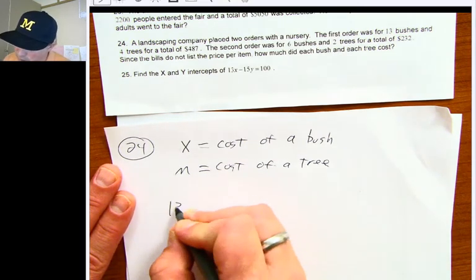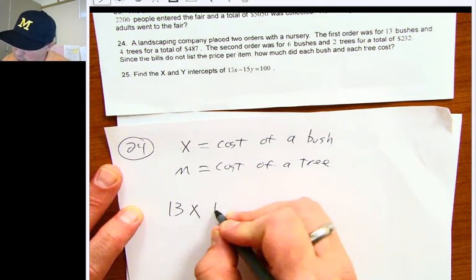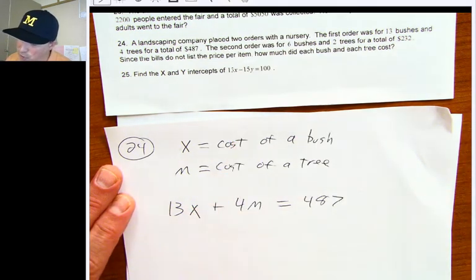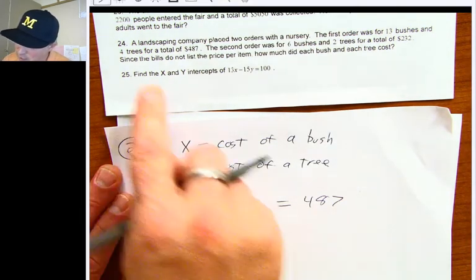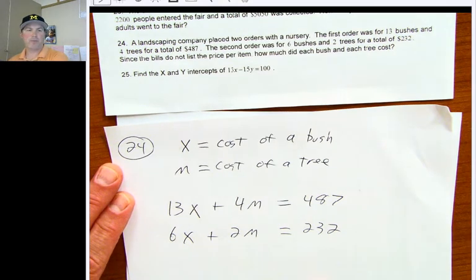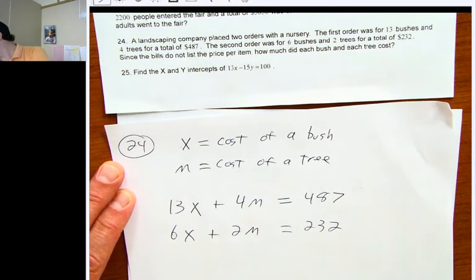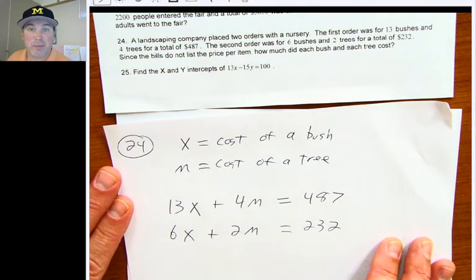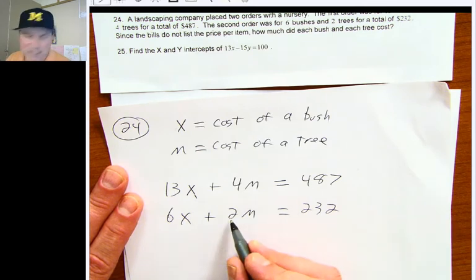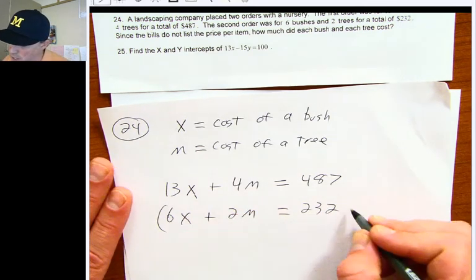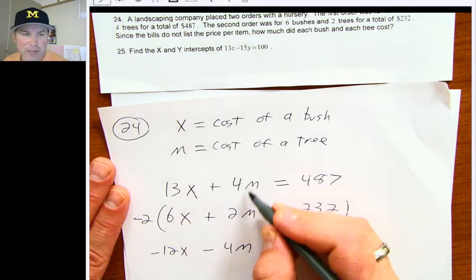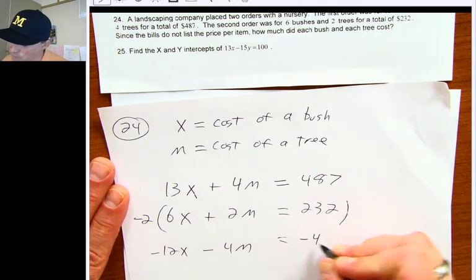Now in situation one, 13 bushes, so 13x and four trees, so 4M was a total of $487. The second situation was six bushes, so 6x and two trees, so 2M, that would be a total of 232. And that's our setup. In this one, I'm thinking I'm going to be using some elimination here. I'm noticing with these M's that if I multiply the second equation by negative 2, that'll give me negative 12x minus 4M and negative 464.